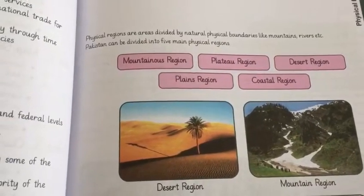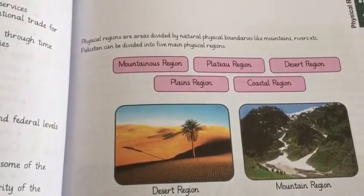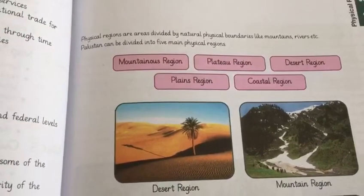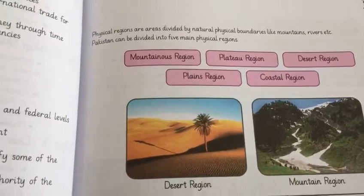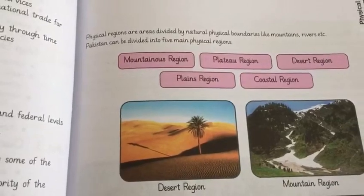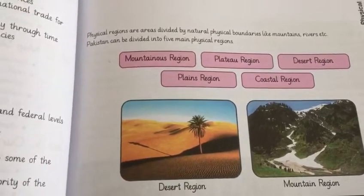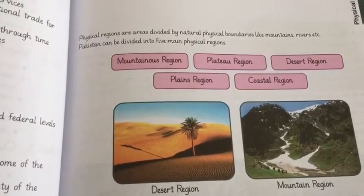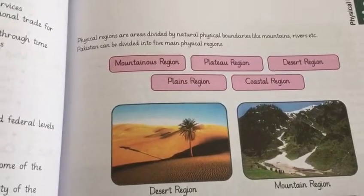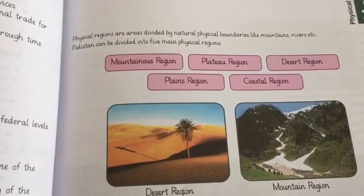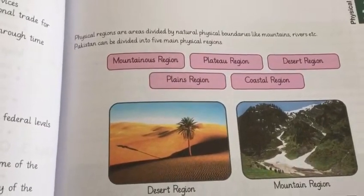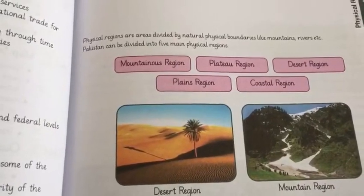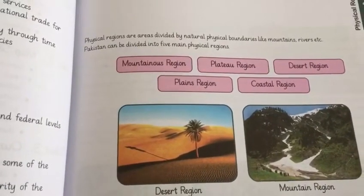Physical regions are divided by natural sources or natural boundaries. Natural boundaries include all those landforms and boundaries given to us by nature.